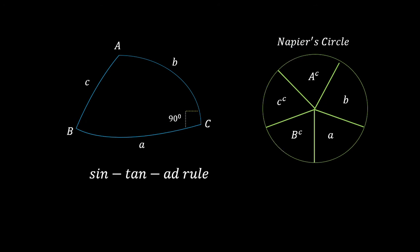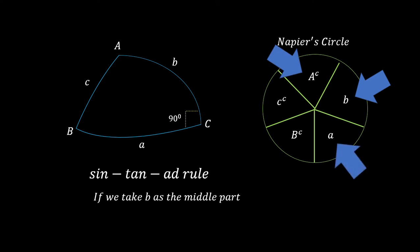Let's try another middle part — say b. If we take b as the middle part, its adjacent parts are a-complement and a. Applying the sin-tan-adjacent rule: sin(b) is equal to the product of the tangents of the adjacent parts, which is tan(a) × tan(a-complement). That's it — for any element in Napier's circle, just choose your middle part, and as long as you know the adjacent and opposite parts, you can apply Napier's rule using either the sin-cosine-of or sin-tan-adjacent forms.